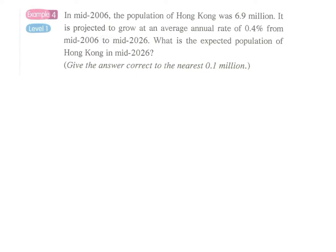Example 4. In mid-2006, the population of Hong Kong was 6.9 million and it is projected to grow at an annual rate - annual rate means yearly - it grows by 0.4% per year.